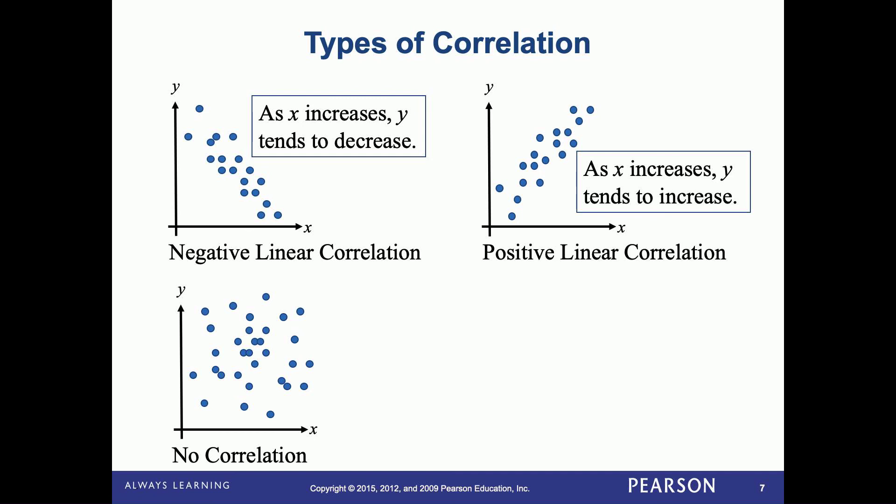If the points are just all over the place and you can't determine what the pattern is, whether it's going downhill or uphill, it just looks like a shotgun shell went off, just points everywhere, there's no correlation.